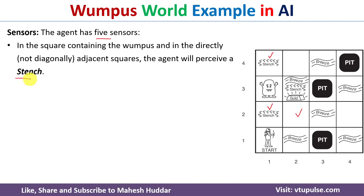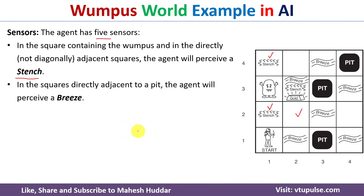So the first sensor is used to sense or perceive the stench. The second sensor is to sense the breeze — whenever the agent is present adjacent to a pit, he will sense the breeze. Whenever he is present at 2,1, he will sense the breeze because it is adjacent to the pit. Whenever he is present at 2,2, he will not be able to perceive the breeze because that room is not adjacent to a pit.